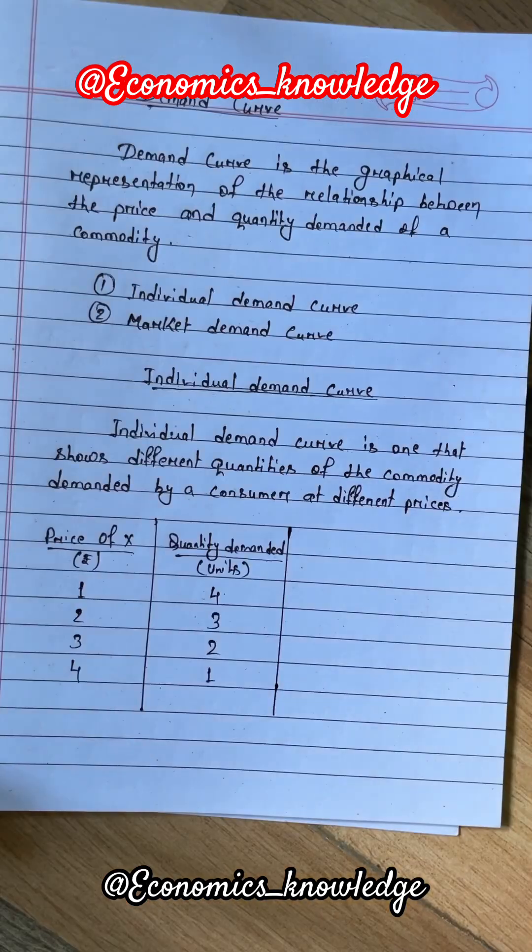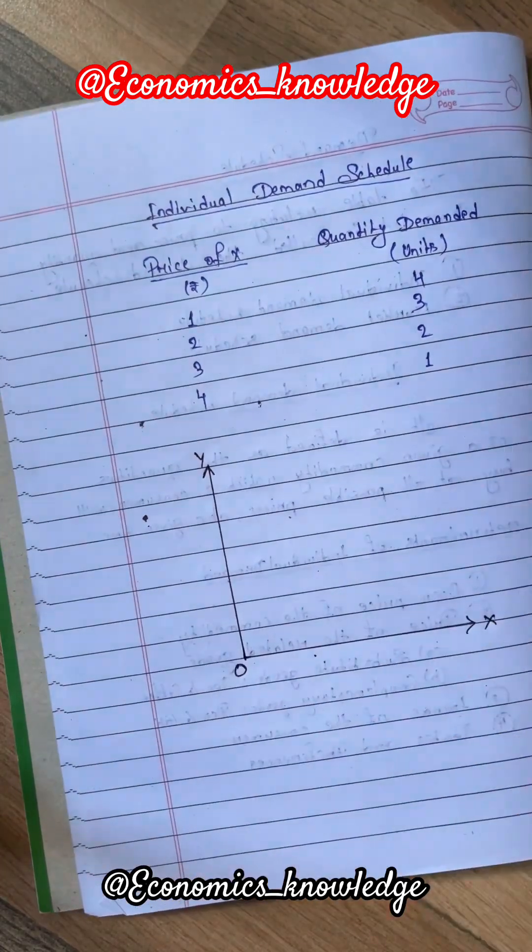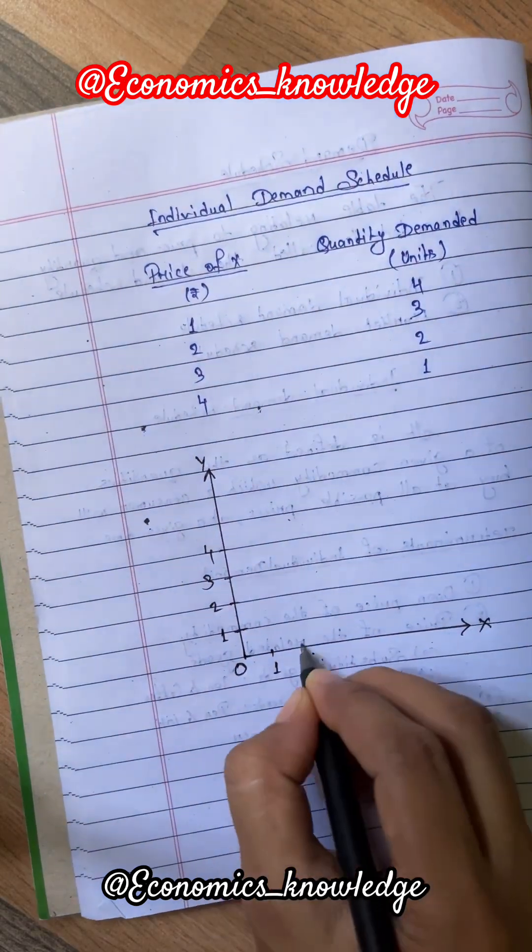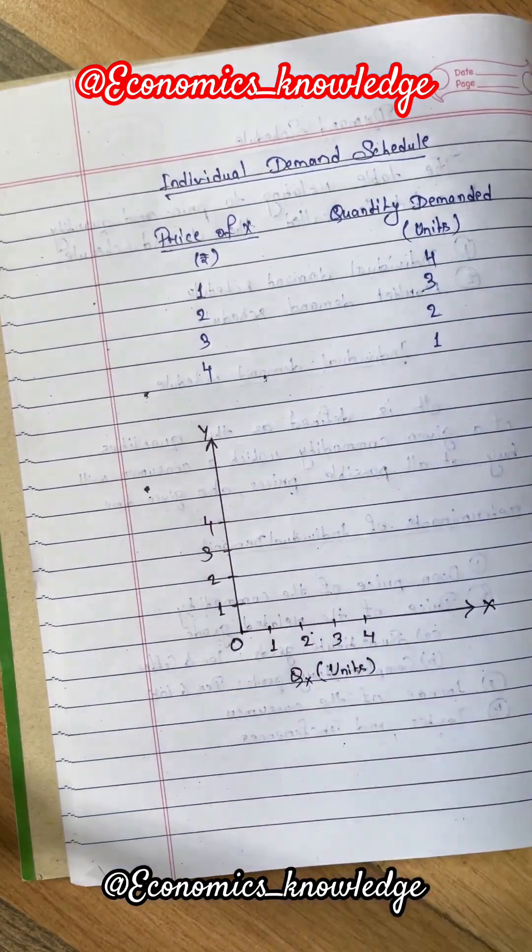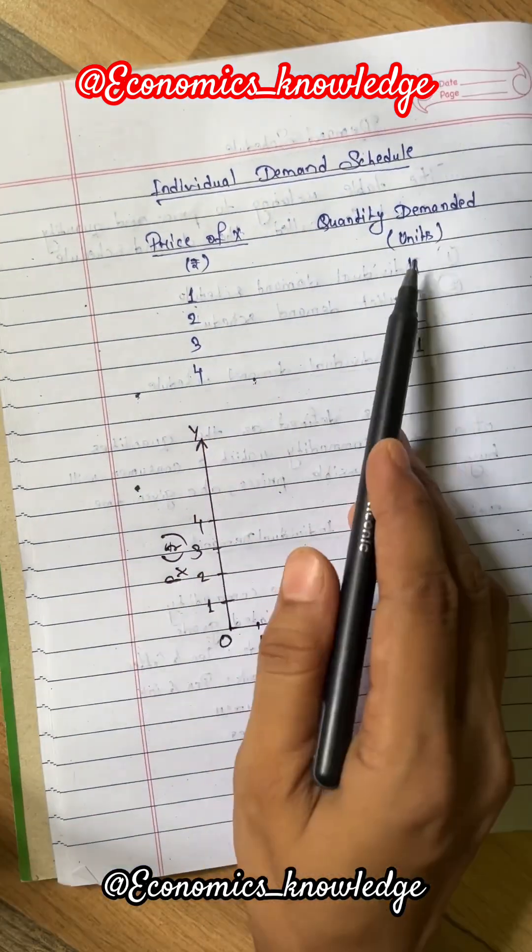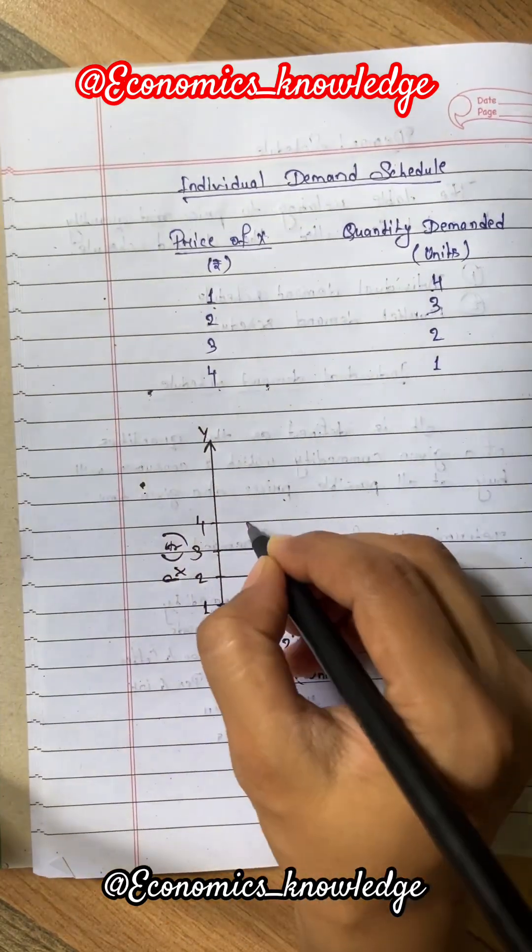Here we will take the example of individual demand schedule to draw an individual demand curve. In the diagram, demand of the commodity is shown on x-axis and price on y-axis. We will put all the values in the diagram. By joining all the points we will get the demand curve.